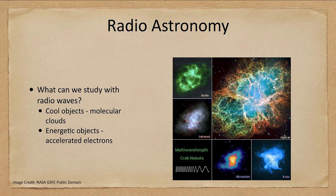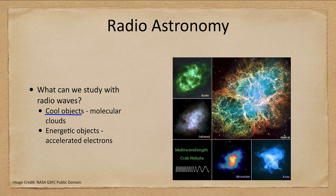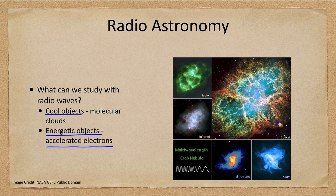When we look at radio astronomy, what can we study? Radio astronomy lets us study the two edges of the spectrum. We can look at very cool objects like molecular clouds, which do not give off visible light but do give off radio waves. However, we can also study highly energetic objects, because accelerated electrons will also give off radio waves.